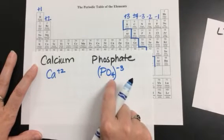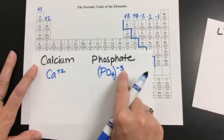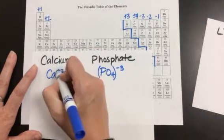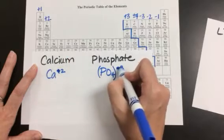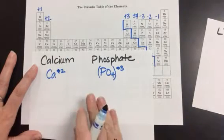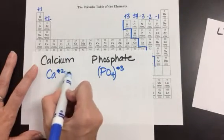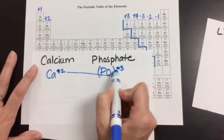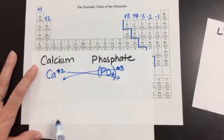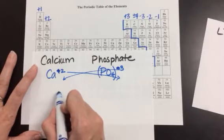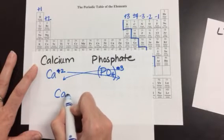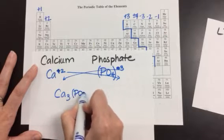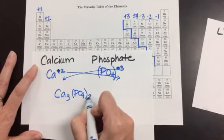I'm going to put this in parentheses to lock in the PO4 — that cannot change. What I'm going to swap and drop is the negative 3 and the positive 2. My negative and my positive cancel out and disappear. This 2 comes over to my phosphate, and this 3 comes over to my calcium. So when I write this formula, it's Ca3(PO4)2.